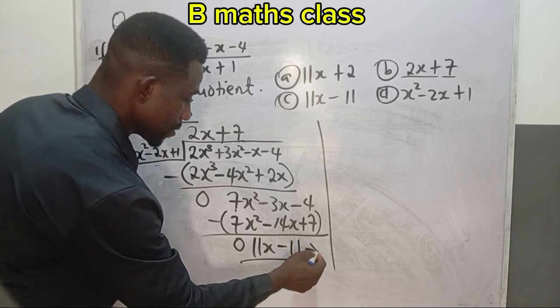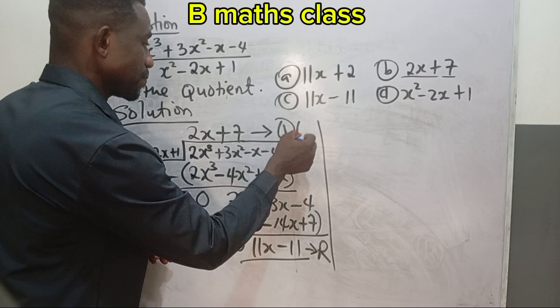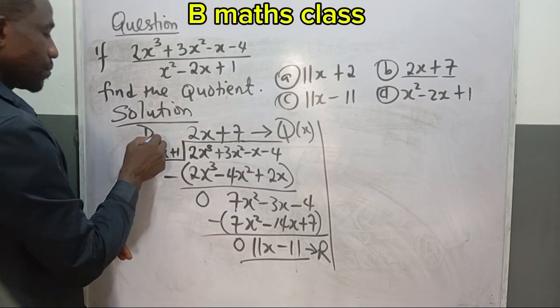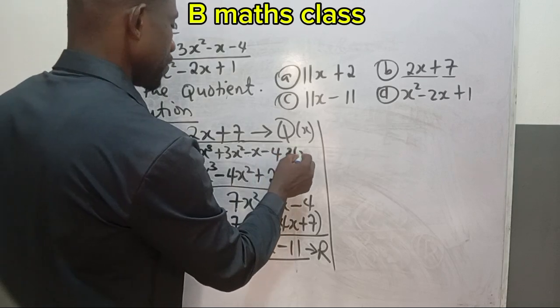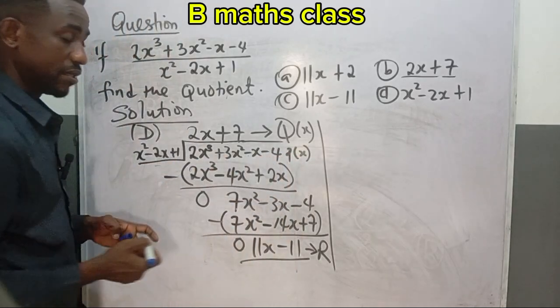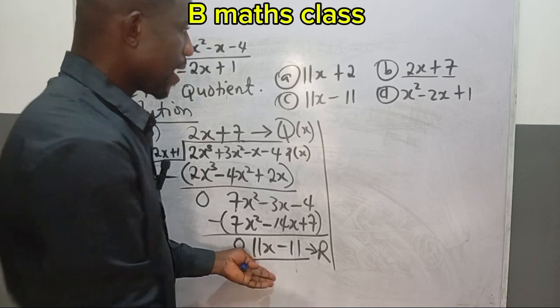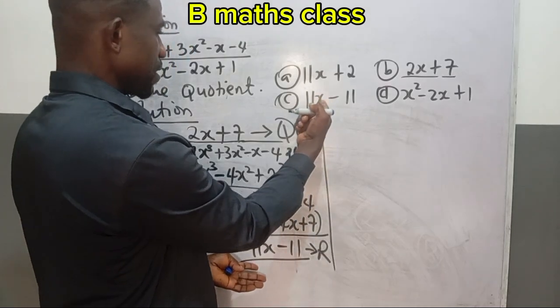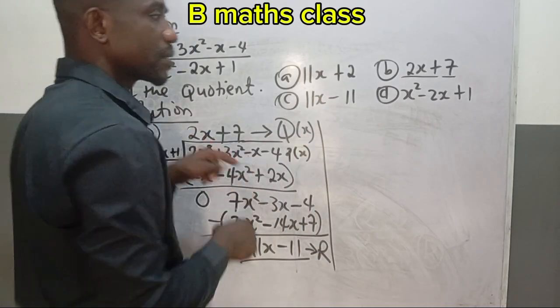So this gives us the remainder, as this is the quotient. Then this is the divisor D. Here is the polynomial P(x), which is also called the dividend. So in the option, they didn't ask us to look for the remainder, then we would have chosen C, but they asked to find the quotient Q, which is 2x + 7.